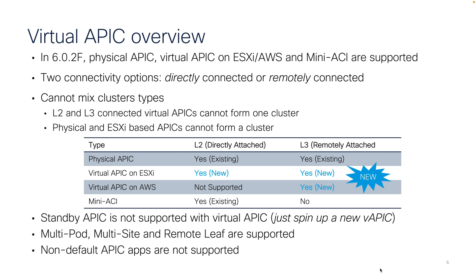I have a little matrix here to give you a visual representation of what we're talking about. Some other things to keep in mind: we don't support the notion of a standby APIC, but in my opinion that's not a big deal if it's all virtual — if one of those virtual APICs should fail, it's trivial to spin up a new APIC and have it join the cluster. Also know that we do support multipod, multi-site, and remote leaf with these kinds of deployments. The last thing to be aware of is we don't support what we're calling non-default APIC apps — in the APIC apps tab you might have installed some third-party apps or utilities, and those are not supported with the virtual APIC. They're still supported with the physical APIC, just not virtual.